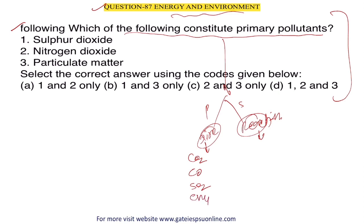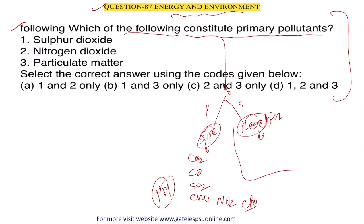Also, methane (CH₄), nitrogen oxides, and particulate matter are primary pollutants. Particulate matter refers to small pieces of solid material like dust particles in air. These are directly considered primary pollutants.